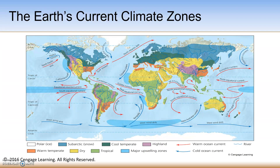This slide depicts the Earth's climate zones, also called biomes, which will be discussed in more detail in the next couple of slides. This map also shows major ocean currents and upwelling areas where currents bring nutrients from the ocean bottom to the surface. To reiterate, the Earth's surface affects local climates: heat is absorbed and released more slowly by water than by land, therefore creating land and sea breezes.